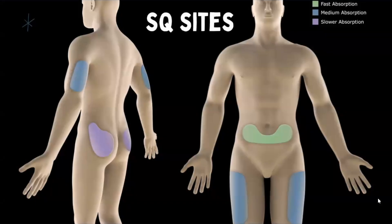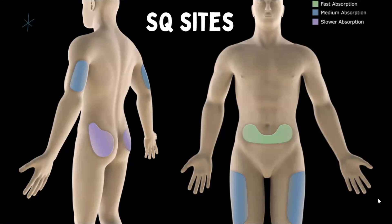Here on the video you can see the different subcutaneous sites. We have the back of the arms — a very common site to give insulin. You also have the upper thighs and the abdomen, which is also a very common site. You're typically going to give heparin and Lovenox — the blood thinners — in the abdomen area. You can also give insulin there. The upper arms are typically where we give insulin as well.